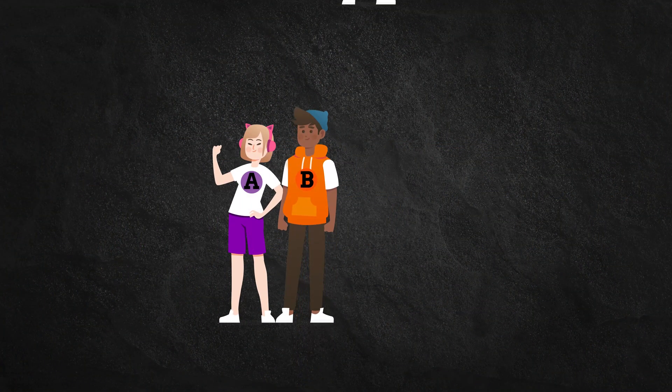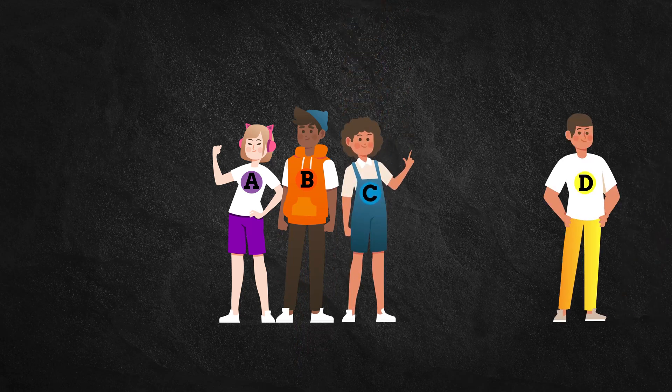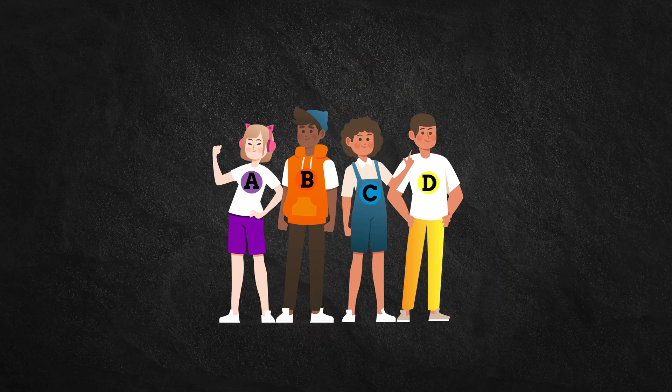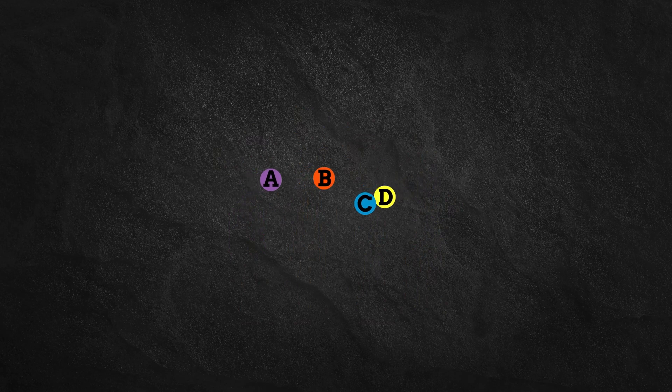Alice, Bob, Carol, and Dan are part of a social network. Let's represent them as nodes and draw edges connecting the nodes to indicate friendships.